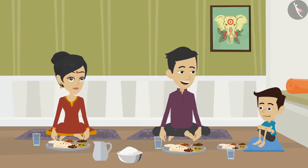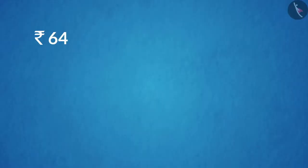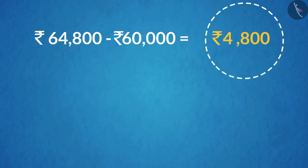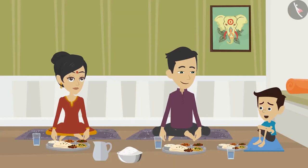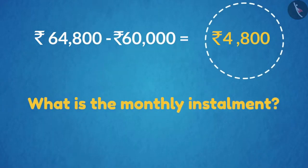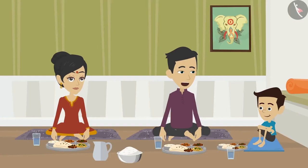If we subtract 60,000 from 64,800, we get 4,800. That means you have to pay 4,800 rupees as interest. But dad, how do we know the amount we have to pay in a month?